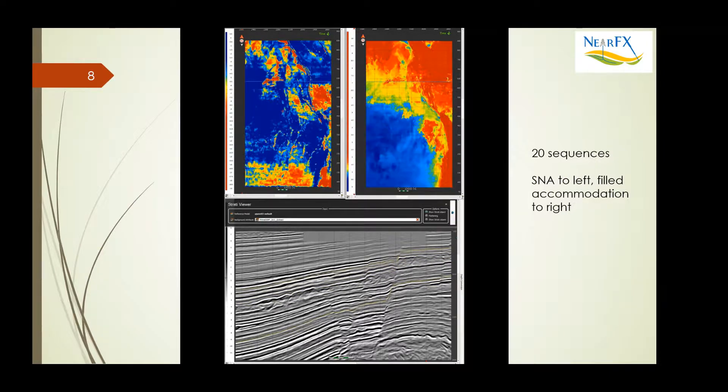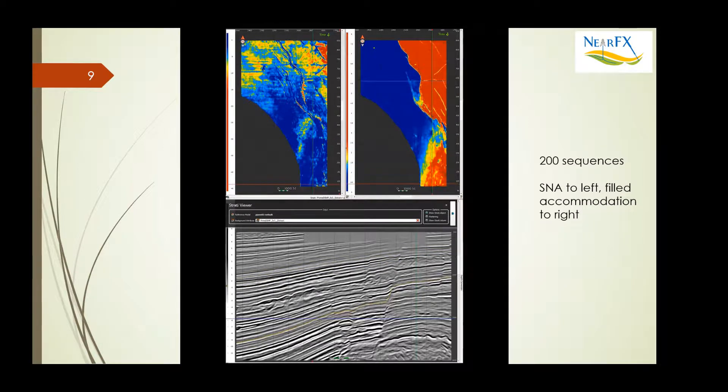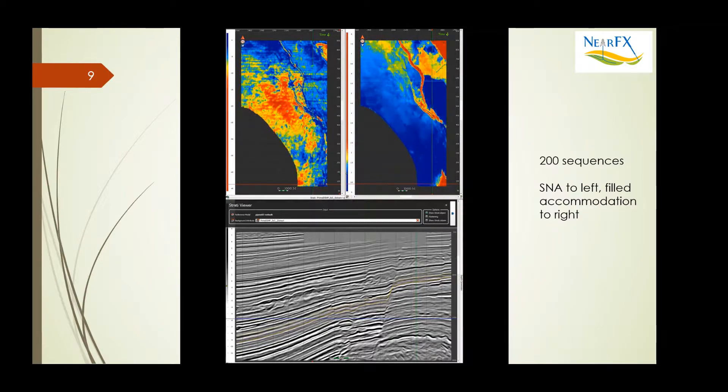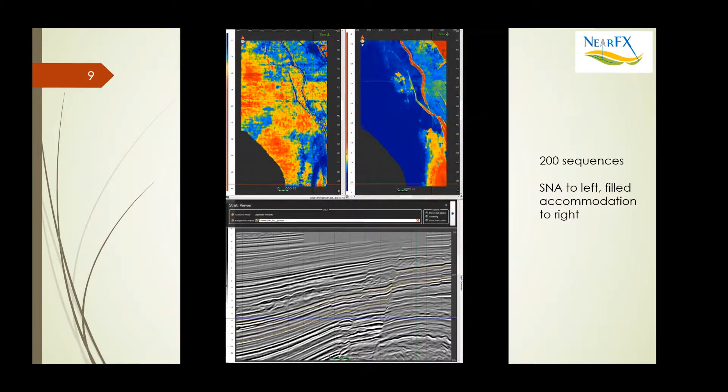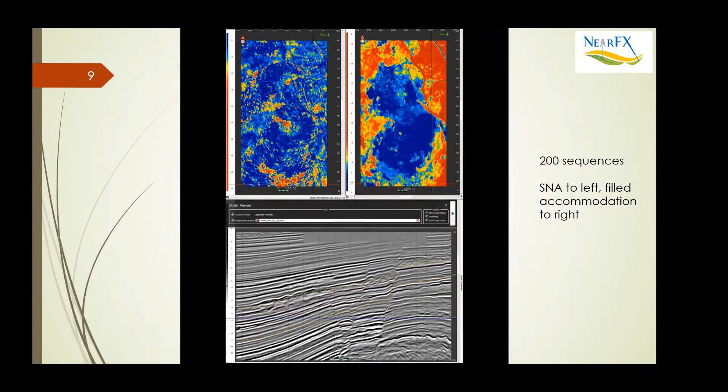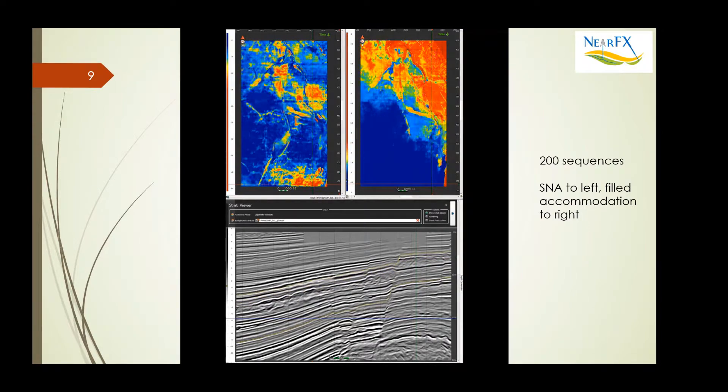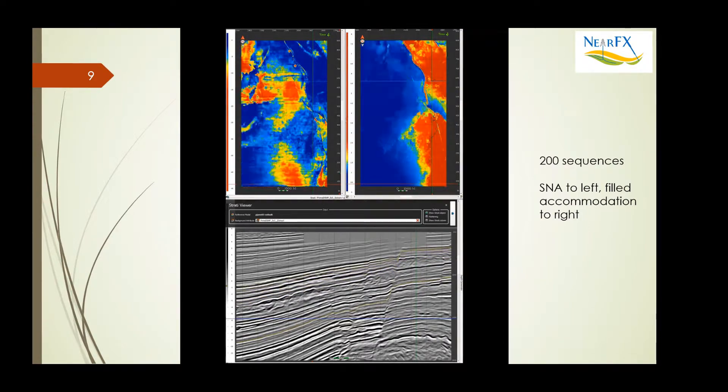Well it might be, but let's compare it to what happens with a much more finely sampled product. Here are 200 sequences, and any geologist that's trying to understand the environment of deposition has to look at this and say, 'You know, I have a much better feel for what's going on with this much more finely sampled stratigraphy.' It greatly aids in seismic stratigraphic analysis.